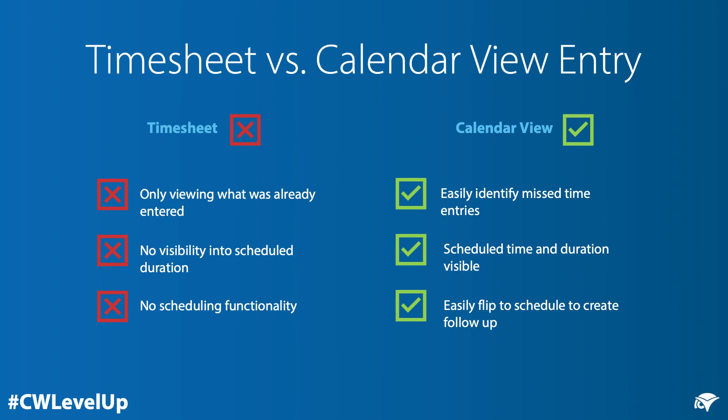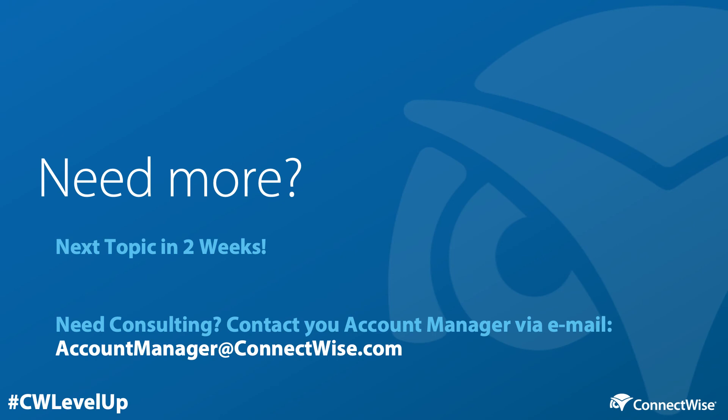Using a calendar view entry method versus the timesheet offers many advantages. With the timesheet, you're only viewing what was already entered — no visibility exists for scheduled duration, and there's no scheduling functionality. However, using the calendar view, you can easily identify missed time entries, see scheduled time and duration, and easily flip over to the schedule to create a follow-up action.